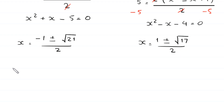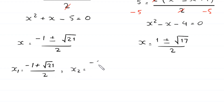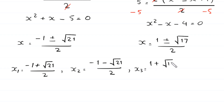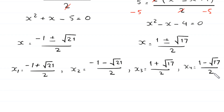From the first equation we get two values: x1 equals (negative 1 plus square root of 21) divided by 2, and x2 equals (negative 1 minus square root of 21) divided by 2. From the second equation we get x3 equals (1 plus square root of 17) divided by 2 and x4 equals (1 minus square root of 17) divided by 2. We now verify these values using our two conditions.